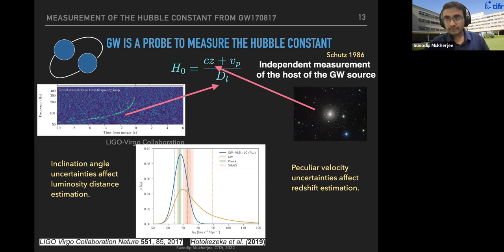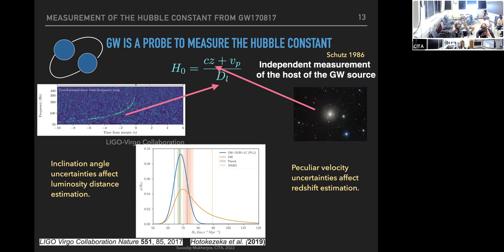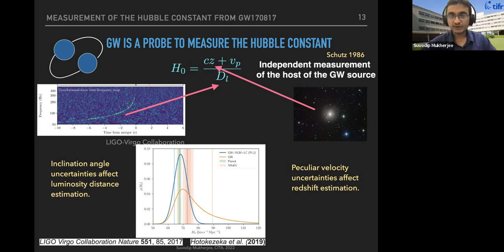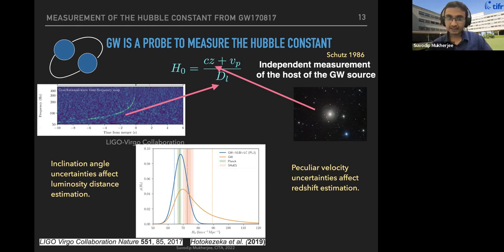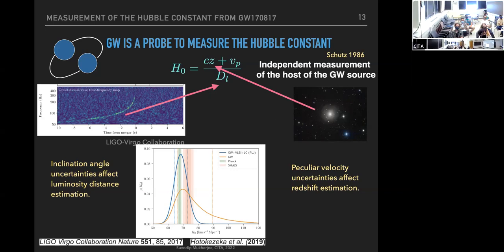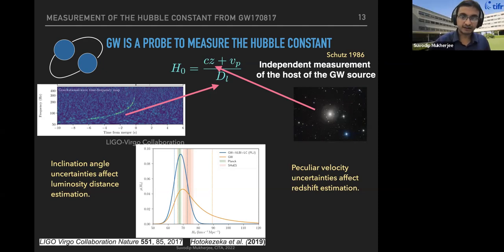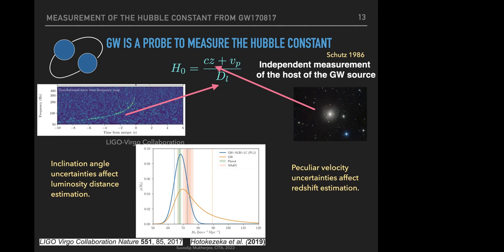[After a brief audio interruption, continuing from the inclination angle discussion.] When you measure the gravitational wave signal, you do not know whether the object is face-on or edge-on. If an object is face-on, you get more gravitational wave signal than when it is edge-on. If you do not know this a priori and make a luminosity distance measurement, a face-on object may appear nearer while an edge-on object may appear further away — luminosity distance and inclination angle are degenerate quantities, and we need to break this degeneracy with additional observations.